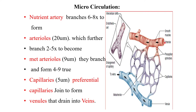The arteriole further branches two to five times to become metarterioles. The metarteriole is a thoroughfare vessel because it goes directly into the venule. These metarterioles then form capillary networks via the pre-capillary arteriole. The venules drain into the vein, and the metarteriole divides into the capillary network before draining through the venules into the vein.